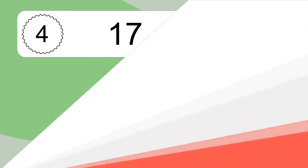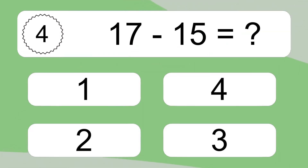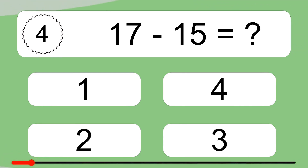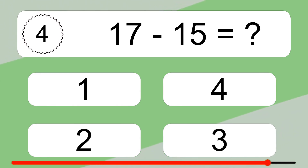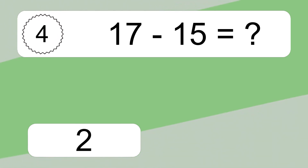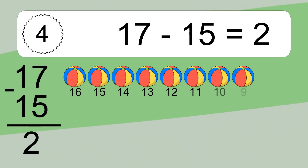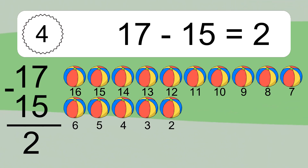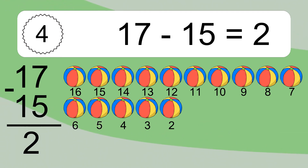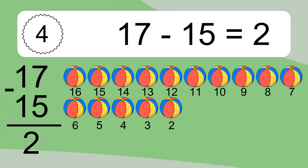17 minus 15 equals what? 17 minus 15 equals 2. Let's count it: 16, 15, 14, 13, 12, 11, 10, 9, 8, 7, 6, 5, 4, 3, 2.